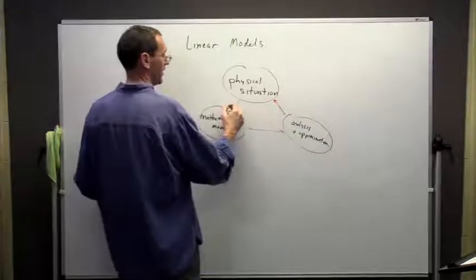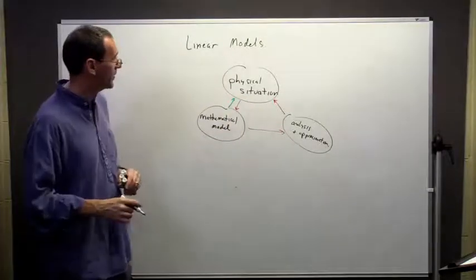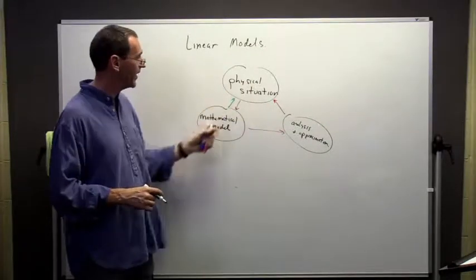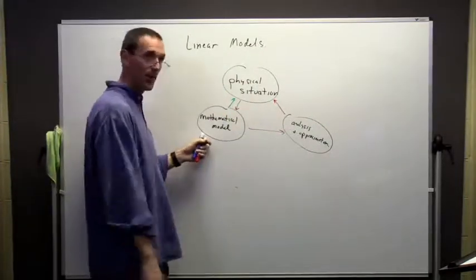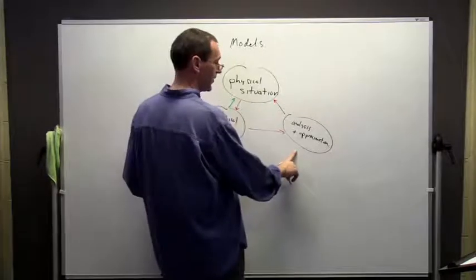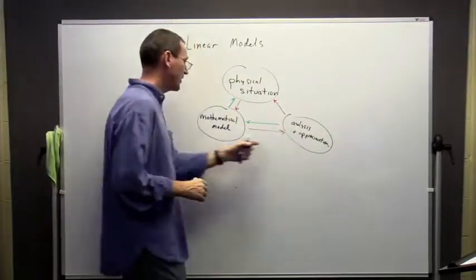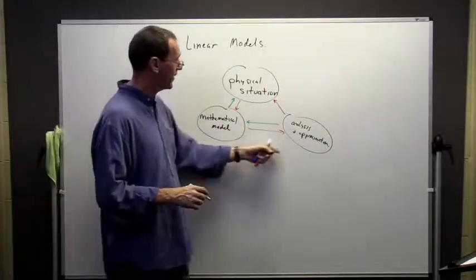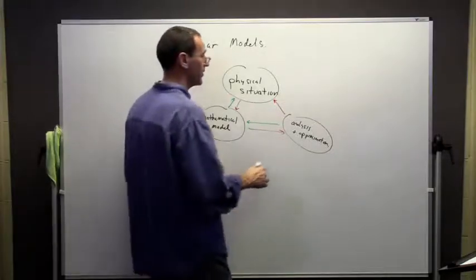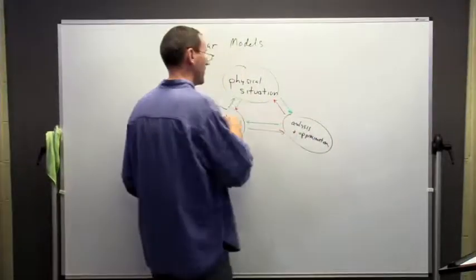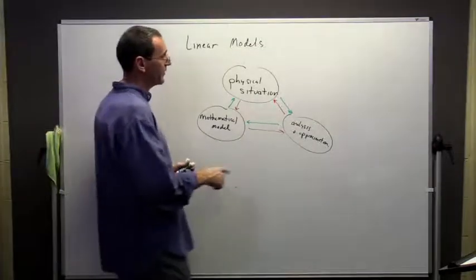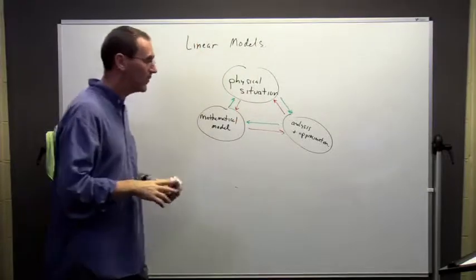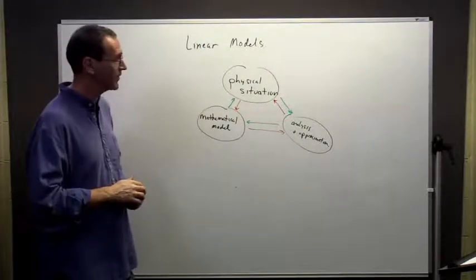Often what happens is we'll look at the mathematical model, we may not like it, and go back and think about whether we're missing something. We may go back and forth many times. Once we get a model we like, we'll start doing analysis, and maybe that isn't so nice either. If we get things we don't understand or that seem counterintuitive, we may end up going back to the physical situation. There are basically these three things in terms of what we're interested in in this class.